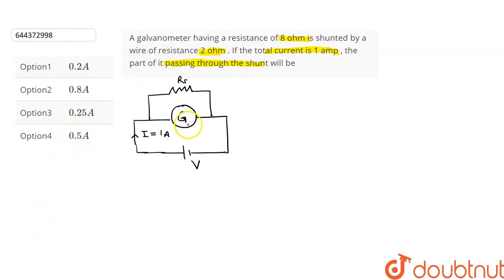Let's find out. This is a galvanometer and the resistance of galvanometer is 8 ohms. So, G is equal to 8 ohms and it is given that the value of shunt resistance is 2 ohms. So, RS is equal to 2 ohms.